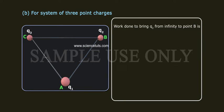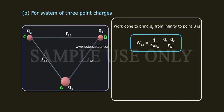Work done to bring Q2 from infinity to point B is W12 equals 1 by 4 pi epsilon naught of Q1 by R13 plus Q1 Q2 by R12.